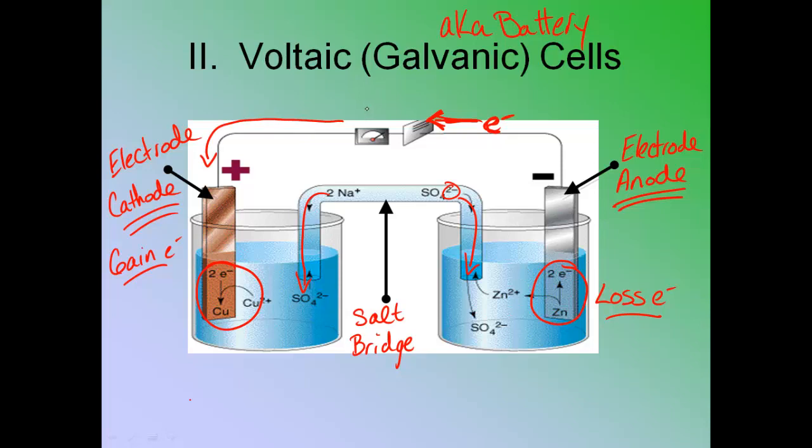So the electrons are passing in this direction and flowing down through the wire. And this thing in the middle is just like your meter. It could be a light bulb. I don't know how to spell. It could be a light bulb. It could be a meter like it is here, which actually measures the electrons. It could be any number of different things.